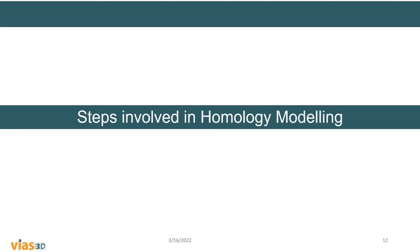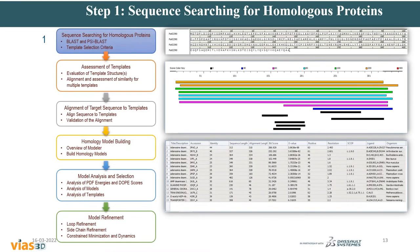Now let's look at the steps involved in homology modeling. The first step is checking your sequence: you have your query sequence and you check whether a template is available. You search for templates using BLAST-P for protein structures or BLAST-N for nucleotide structures.